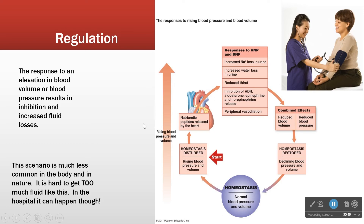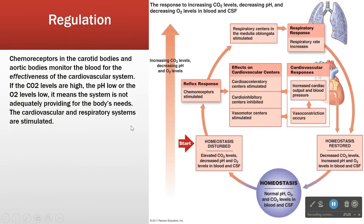Physiology is about taking the factors you've learned and seeing how they behave in different scenarios. That's what these circle diagrams set up: if this changes, what changes next, and how do we get back to homeostasis? This is the excess blood volume case, which is the more rare of the two.